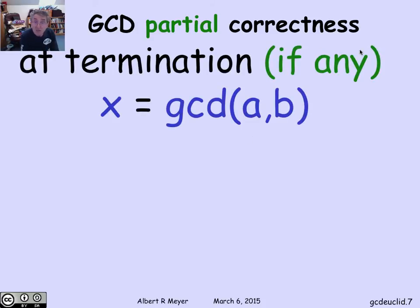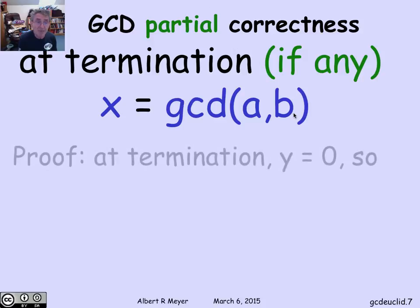The claim is that if this program terminates, we haven't determined that it does yet, but at termination, if any, I claim that the GCD of a and b is left in register x. The value of x at the end is going to be the GCD of a and b.